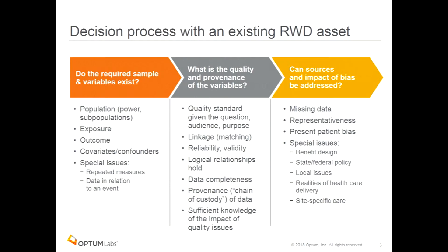Second: what's the data quality and provenance of the variables? This is what the data quality section of Duke-Margolis is working on. The quality standard may vary given the question — is this marketing research or is this for regulatory purposes? Those are very different standards. Has the linkage been assessed well? Do we know that we linked the data appropriately and with an accurate match rate? What's the reliability and validity of the elements? Do the logical relationships hold between data assets that we link together? Do we have completeness in the data sufficient for the question being asked? Do I understand the provenance of the data — what the document refers to as the chain of custody? And do we have sufficient knowledge of the impact of these quality issues?